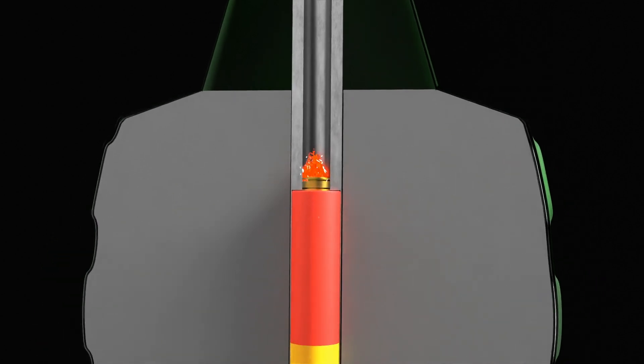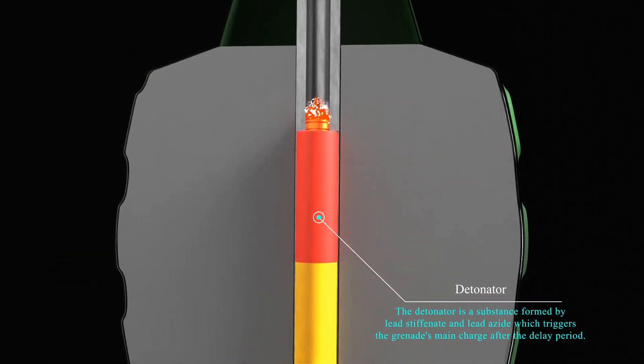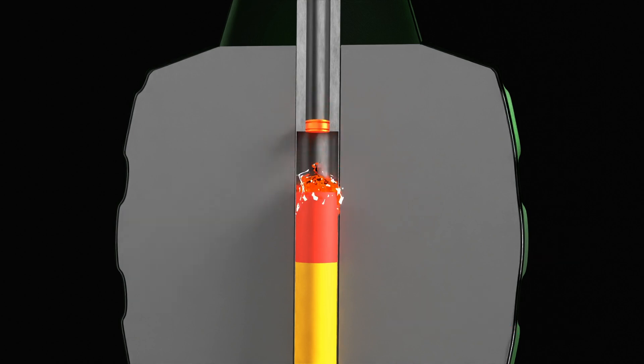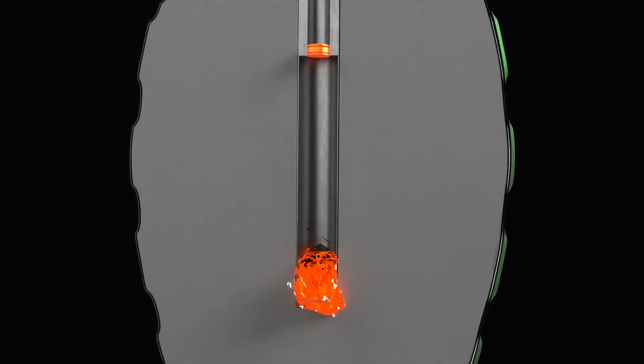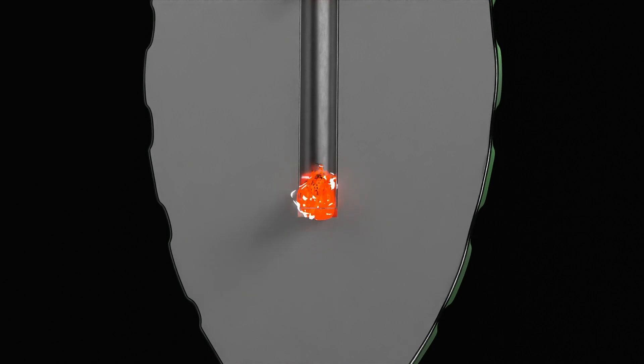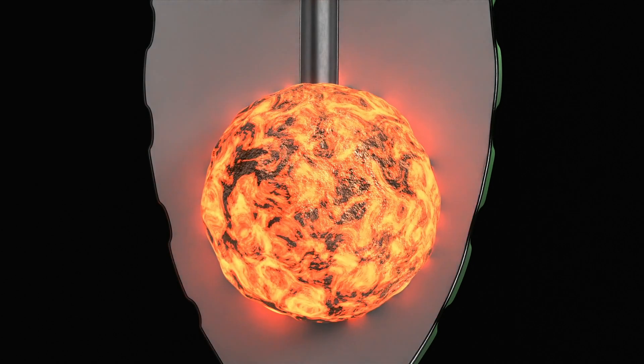At the end of this period, it reaches the detonator or igniter composed of lead styphnate and lead azide. These materials burn rapidly, leading to the detonation of the RDX, which in turn triggers the explosive within the outer shell, causing a powerful explosion.